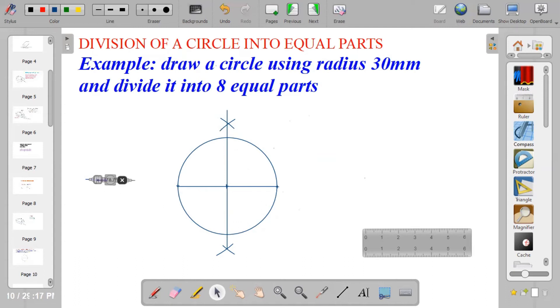I'm going to place my compass on point 1 using radius 30 mm. I will strike an arc above, and I will take it below and strike another arc.